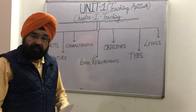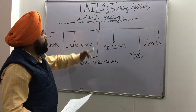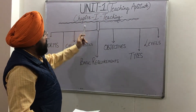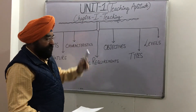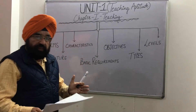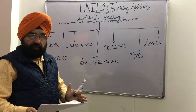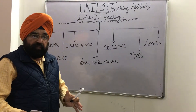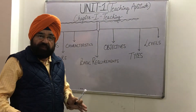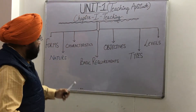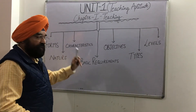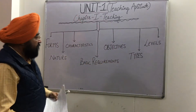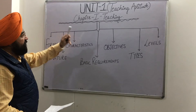Hello students, today we are going to discuss Unit 1 Teaching Aptitude, Chapter 1, that is Teaching. This chapter is very important because ultimately you are going to become a teacher. So we will be seeing one by one: what is teaching and what are the different forms, nature, characteristics, basic requirements, objectives, types and levels. First of all, coming to the definition of teaching.